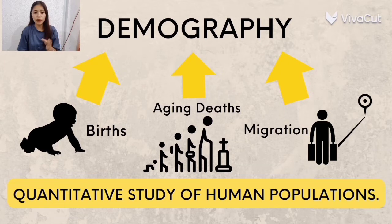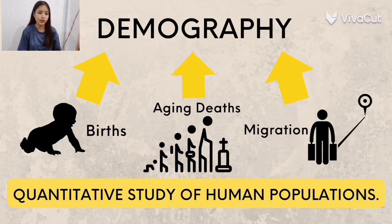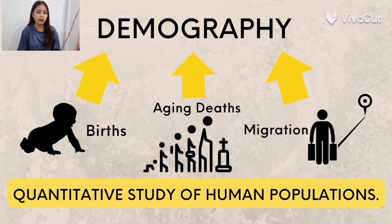Migration means movement of individuals, households, and groups between residences or residential locations. When we talk about births or the fertility rate, this is the average number of children that would be born to a woman over her lifetime.